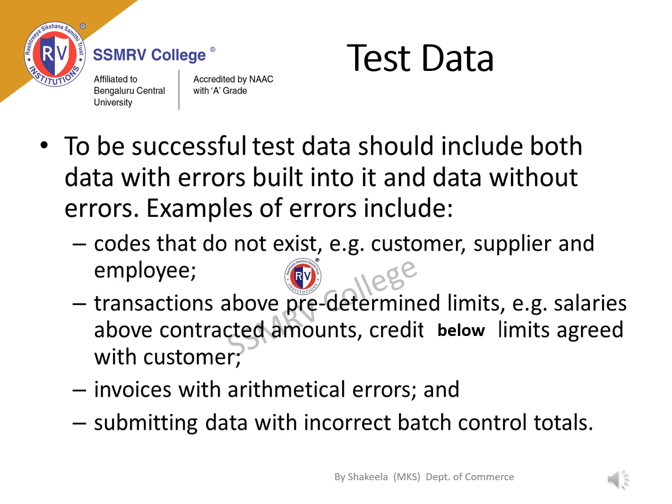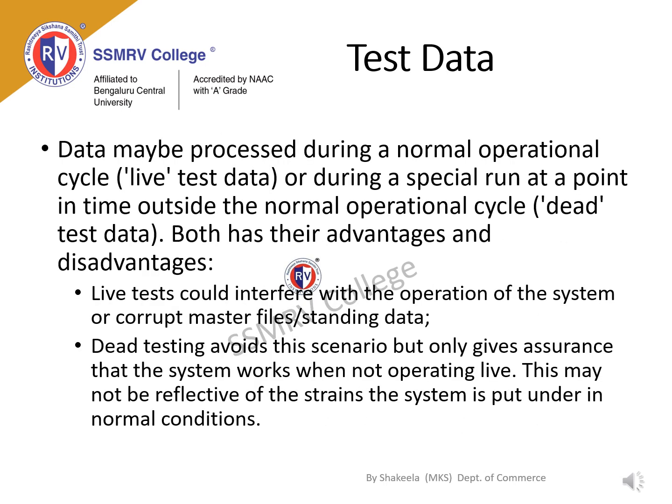For example, test data includes codes that do not exist in the system for a customer, supplier, or employee. Another example is transactions above limit, salaries above the contracted amount, credit below agreed limit, etc. For such invalid data, the result must be negative. If so, the auditor can conclude that the application is behaving as per expected results. If data is processed during a normal operation cycle, it is called live test data. If data is processed outside the normal operation cycle, it is called dead test data.